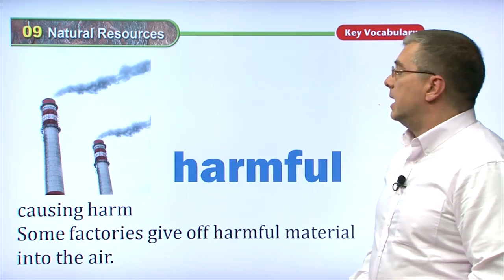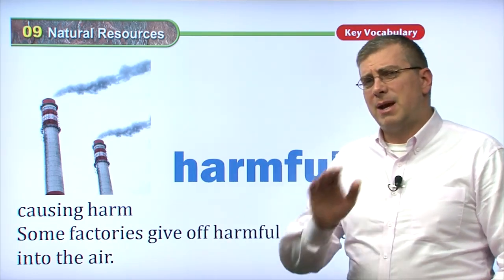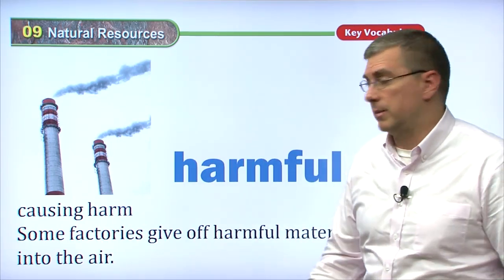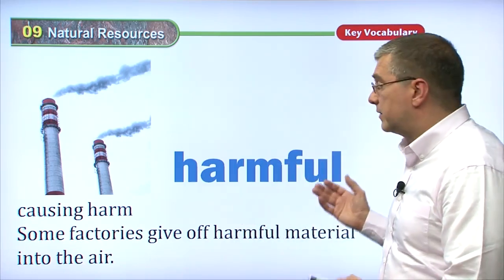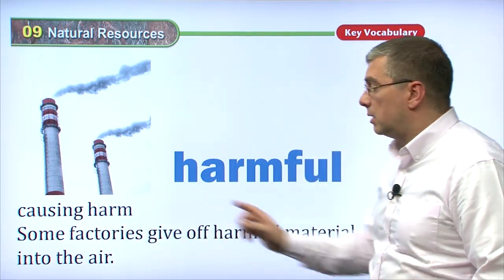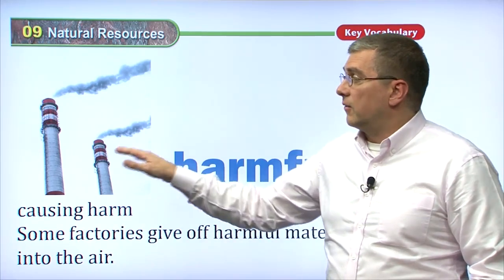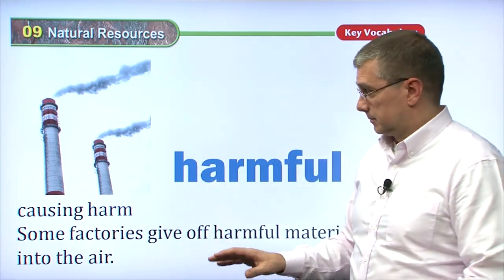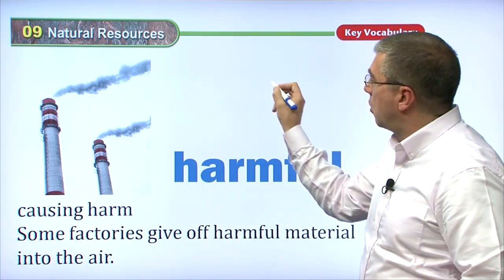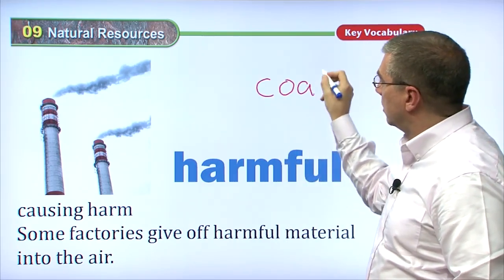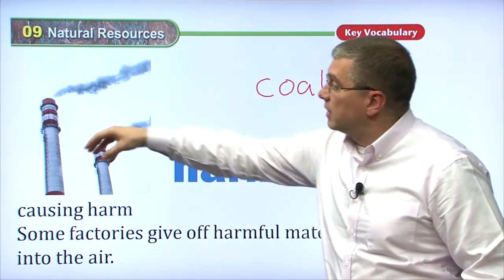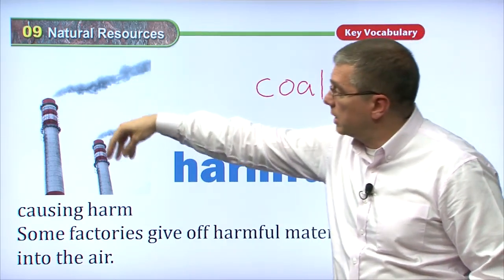So let's move on. We were talking about natural resources, and I made the point that we have to be careful when we use natural resources. We don't want to harm the environment. Things that are harmful cause harm. Some factories give off harmful material into the air. If factories are using natural resources, they might be burning something. Another natural resource not talked about here is coal — coal is another type of mineral. Perhaps a factory will burn coal to produce electricity.